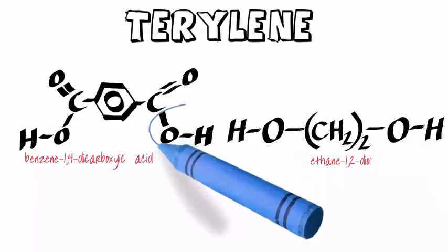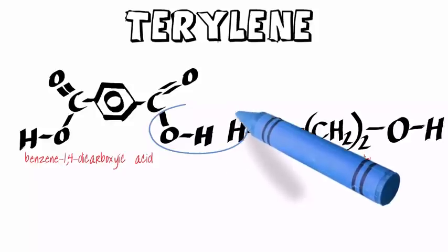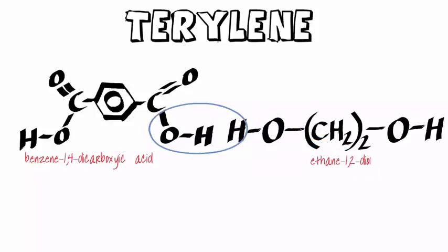And this is how they interact. You can see that the OH of the carboxyl group of the dicarboxylic acid interacts with the H from the diol.